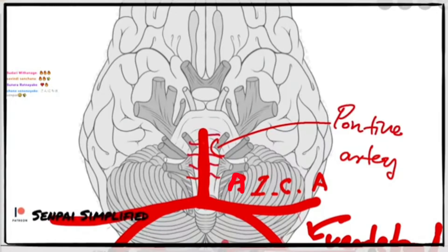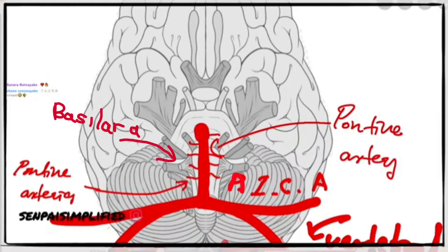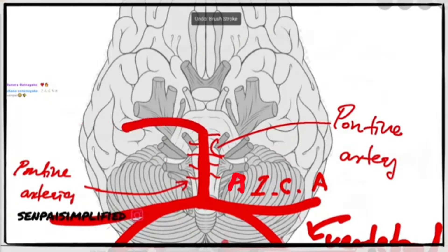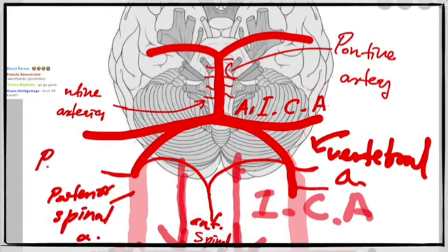There are small arteries coming out of the basilar artery called pontine arteries. At the end of the basilar artery, it gives two other branches. From here you have two arteries coming off — the posterior inferior cerebellar artery, also known as PICA.